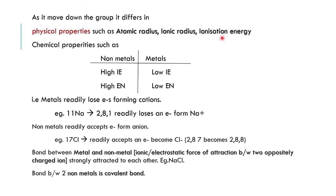Down the group, physical properties such as atomic radius and ionic radius increase, while chemical properties like ionization energy and electronegativity decrease. Non-metals have high ionization energy and high electronegativity; metals have low ionization energy and low electronegativity. Ionization energy is the energy required to remove an electron from the outermost orbital. Electronegativity is the capacity to attract a pair of electrons.